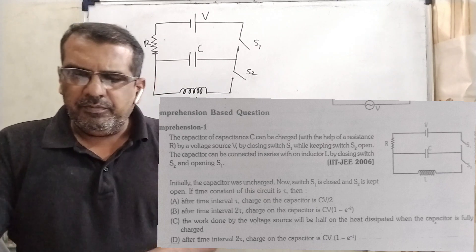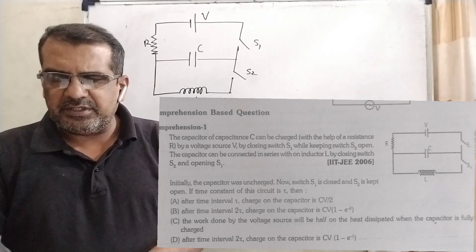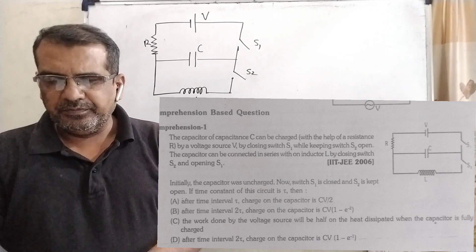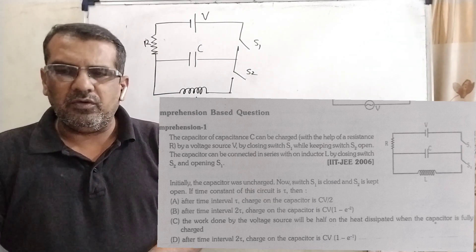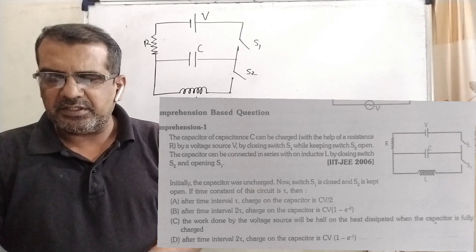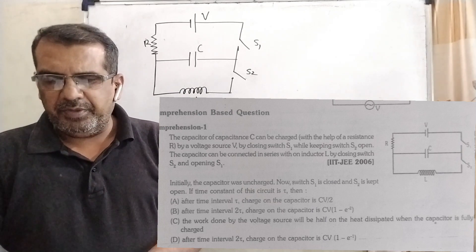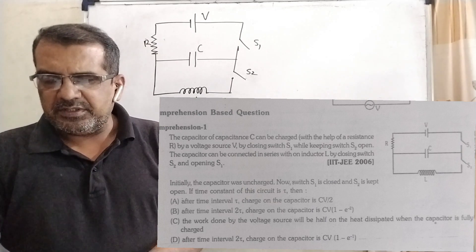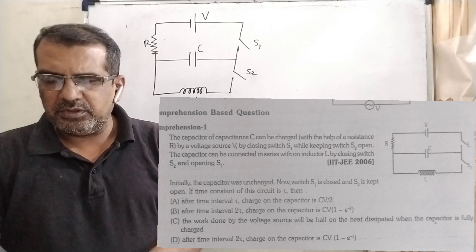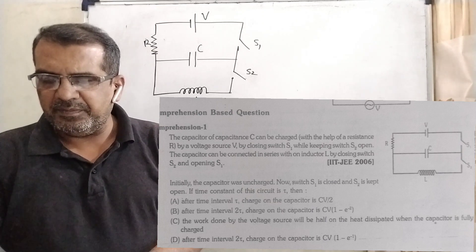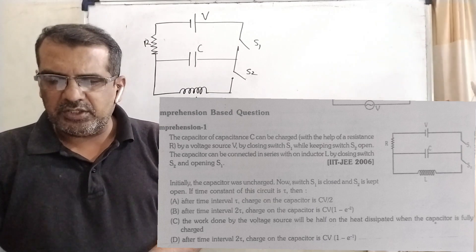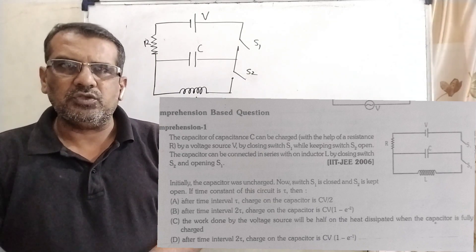Now first question based on this paragraph. Initially the capacitor was uncharged. Now switch S1 is closed and S2 is kept open. If time constant of this circuit is tau, then option A: After time interval tau, charge on the capacitor is CV/2. Option B: After time interval 2 tau, charge on capacitor is CV(1 minus e raised to power minus 2). Option C: The work done by the voltage source will be half of the heat dissipated when the capacitor is fully charged. And option D: after time interval 2 tau, charge on the capacitor is CV(1 minus e raised to power minus 1).